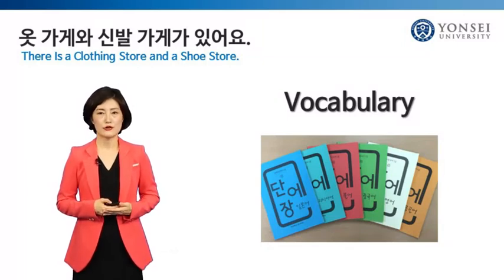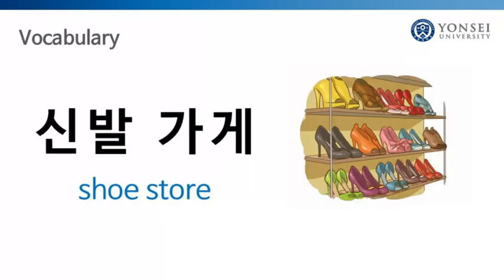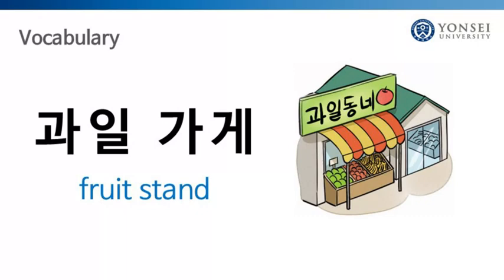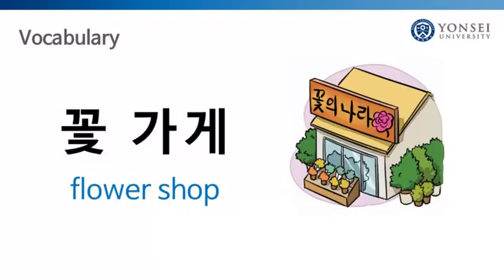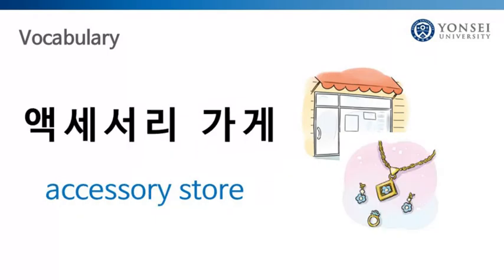Now let's study the vocabulary together. 옷가게, clothing store, 옷가게. 신발가게, shoe store, 신발가게. 과일가게, fruit stand, 과일가게. 꽃가게, flower shop, 꽃가게. 화장품 가게, cosmetic store, 화장품 가게. Accessory 가게, accessory store, accessory 가게.